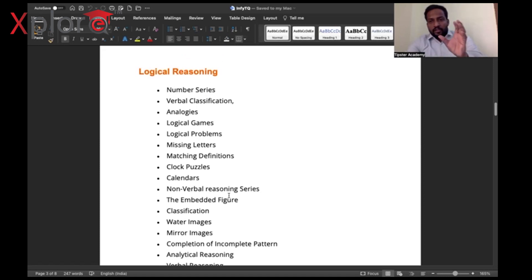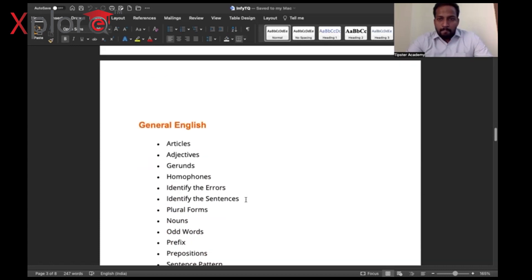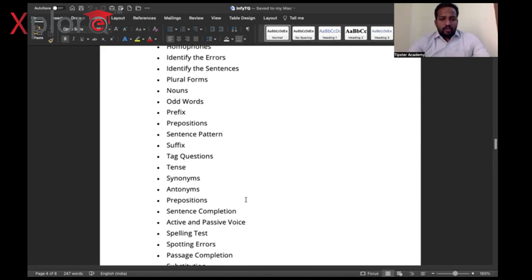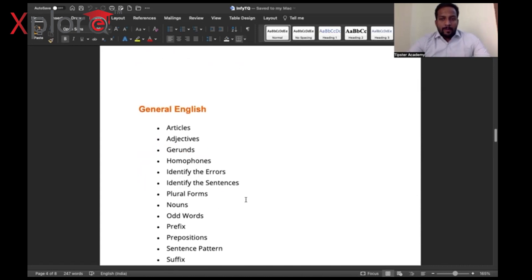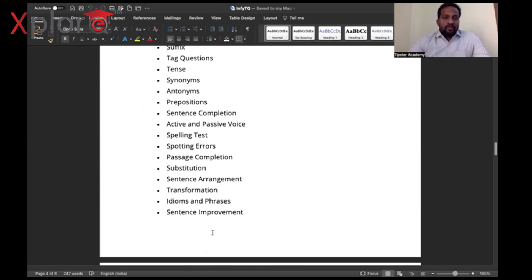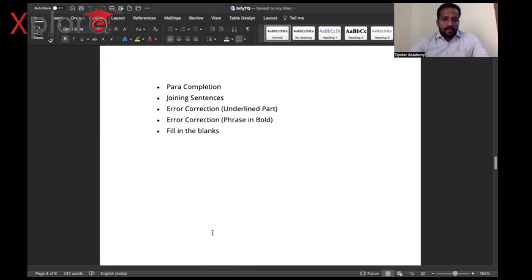Next is General English. These are the list of topics, to be precise. It's just like 100% you may get questions out of only these topics, as every topic is involved. General English consists of many mini topics; take a screenshot if you want or pause the video and take note of it.